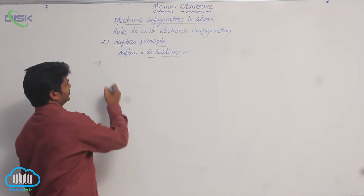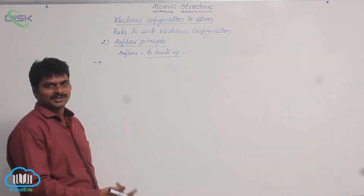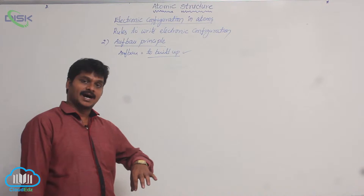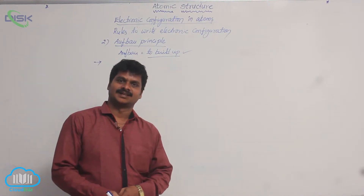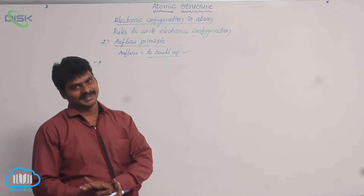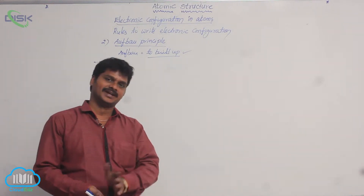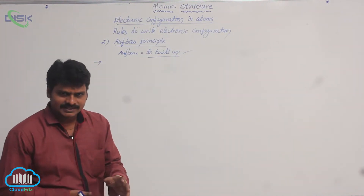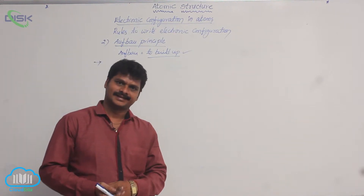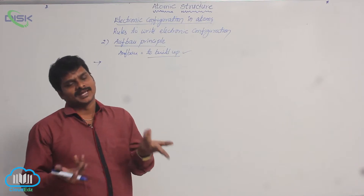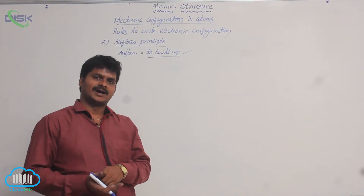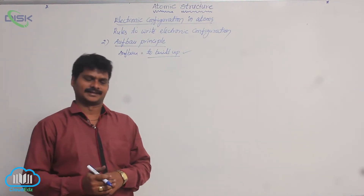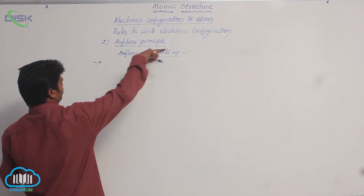What does the Aufbau principle state? In filling orbitals of different energies, the orbital with lower energy is filled first, and after that the orbital with higher energy is filled. Suppose two orbitals are given — 1s and 2s. Which orbital is filled first with electrons? The lower energy one. How do we say whether one orbital is lower energy and another is higher energy? There are some rules I will explain.